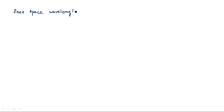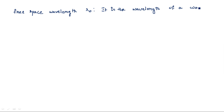The first one is free space wavelength, indicated by lambda naught. This is the wavelength that refers to a waveform that travels in the air, or we can say free space. This is indicated by lambda naught.